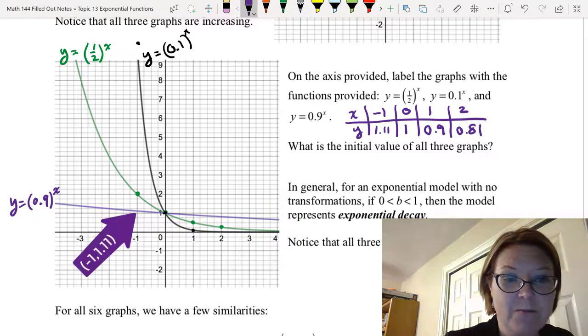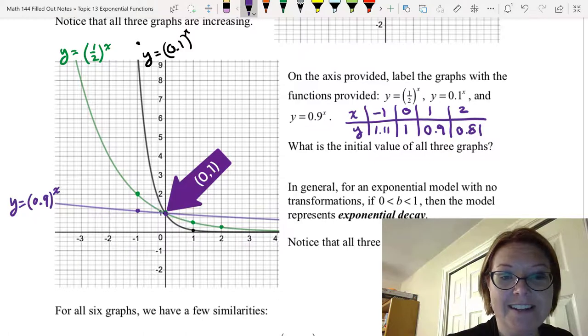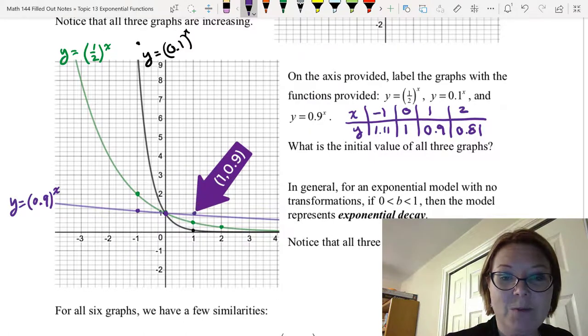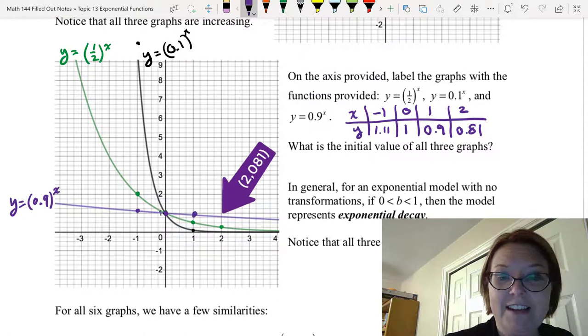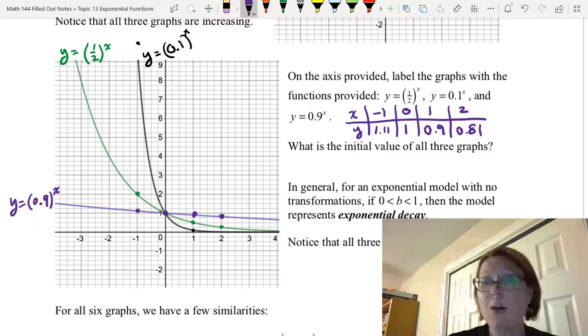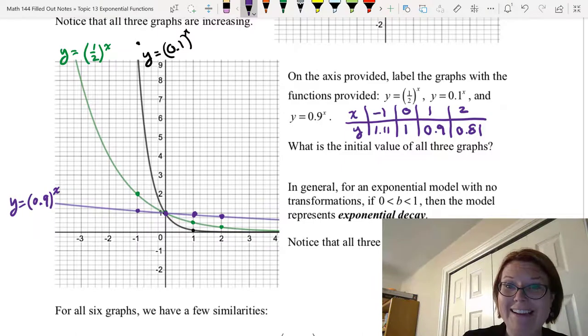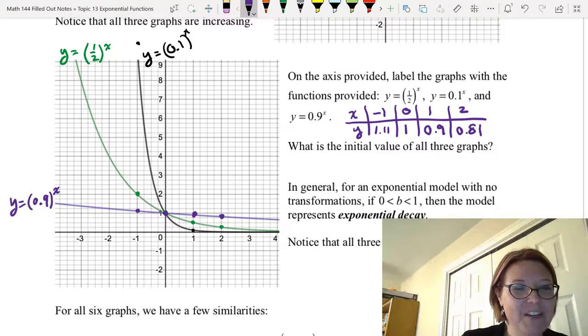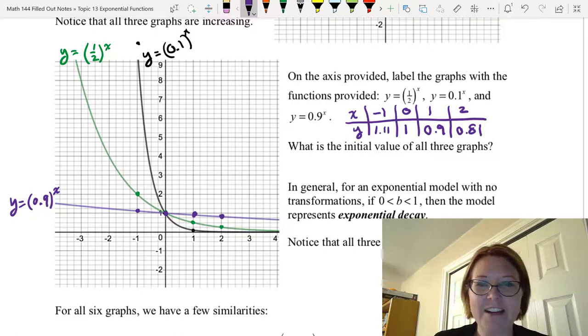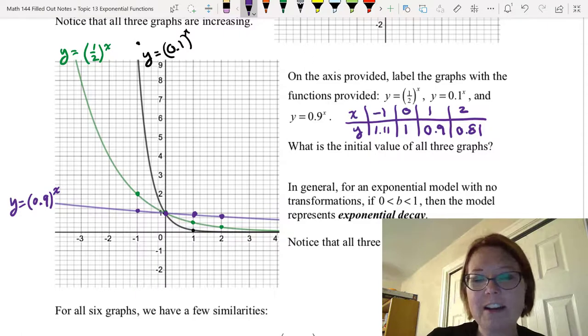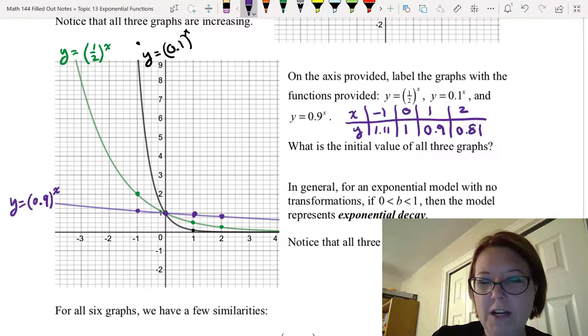Let's go ahead and graph those: negative 1, 1.11, 0, 1, 1, 0.9, and 2, 0.81. Boy, that looks like almost a straight line in the area that we're at in our coordinate plane. It's definitely getting very close to a horizontal line.